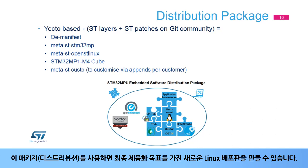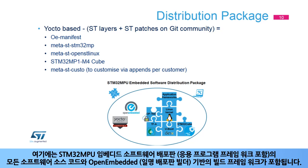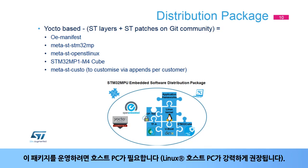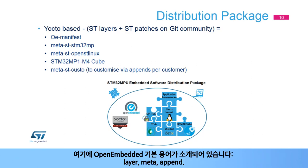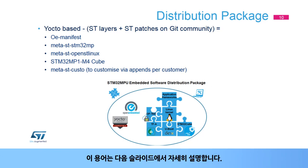The Distribution Package allows the creation of a new Linux distribution with a final objective of productization. It includes the source code of all pieces of software of the STM32MPU embedded software distribution, including application frameworks, plus a build framework based on OpenEmbedded, also known as Distribution Builder. A host PC is required — a Linux host PC is strongly recommended. Some OpenEmbedded basic terms are introduced here: Layer, Meta, Append.